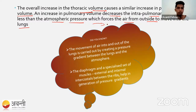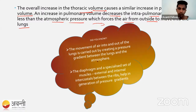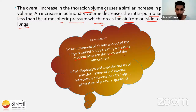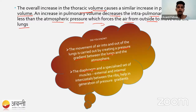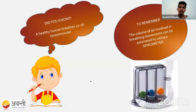To summarize: the movement of air in and out of the lungs depends on the pressure gradient created between the environment and the lungs. The diaphragm and external and internal intercostal muscles are accessory structures that help breathing take place. On average, a human breathes 12 to 16 times per minute.